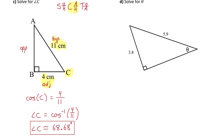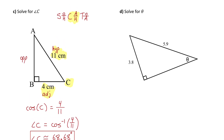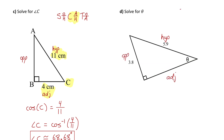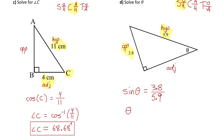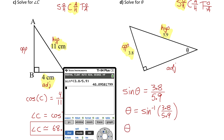In part D, solve for angle theta. Labeling hypotenuse across from the right angle, opposite across from theta, and adjacent touching theta. Because we know the opposite and hypotenuse, inverse sine will help us solve for the missing angle since sine equals opposite over hypotenuse. Sine of theta equals 3.8 over 5.9. Using inverse sine, angle theta is approximately 40.1 degrees.